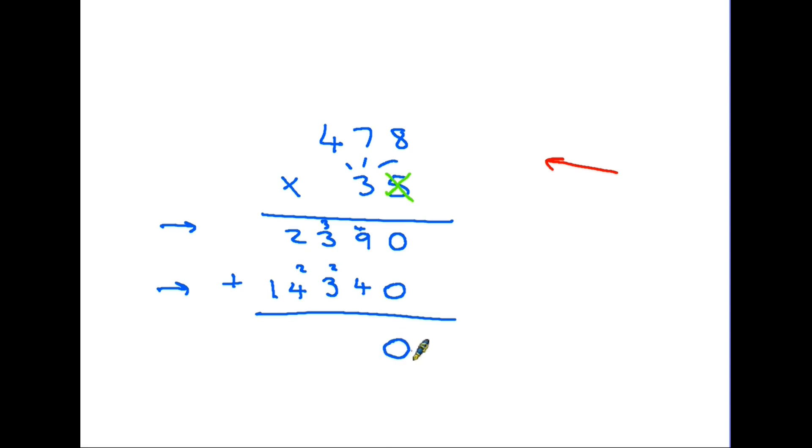9 plus 4 is 13, so once again we are writing the 3 and carrying the 1. 3 plus 3 is 6, plus the 1 is 7. Then we have 4 plus 2 is 6, and the 1 plus nothing is 1. And there's our total. A little bit complicated, but you have to take it step by step.